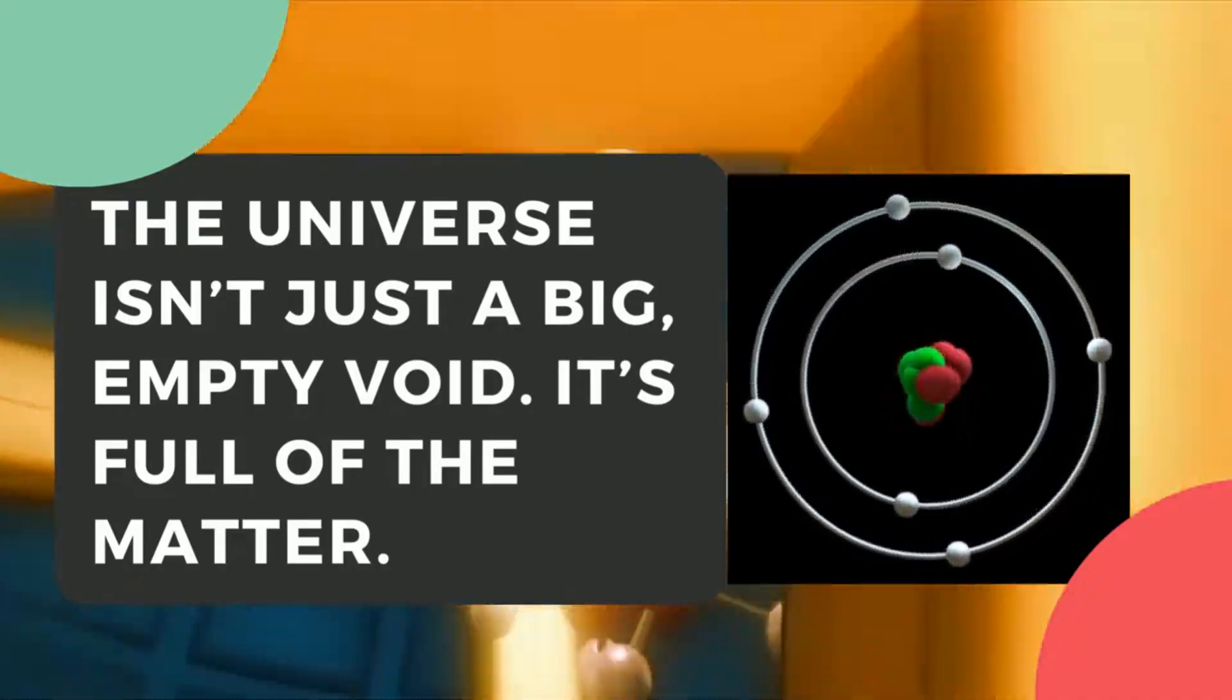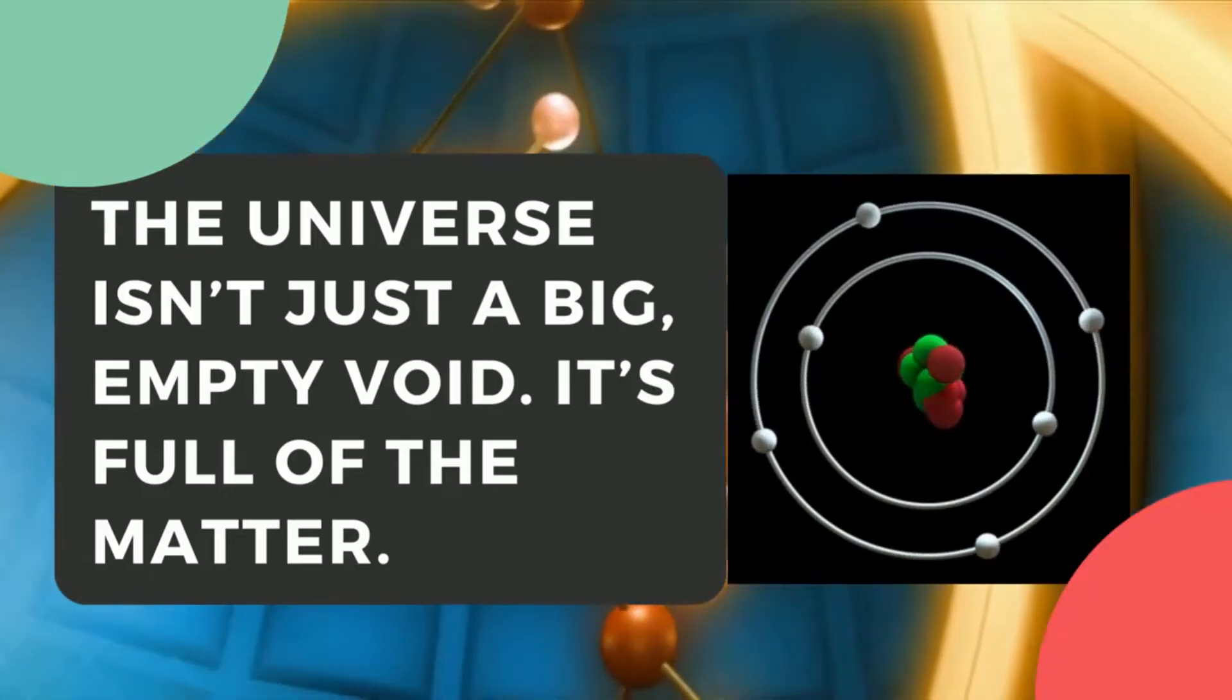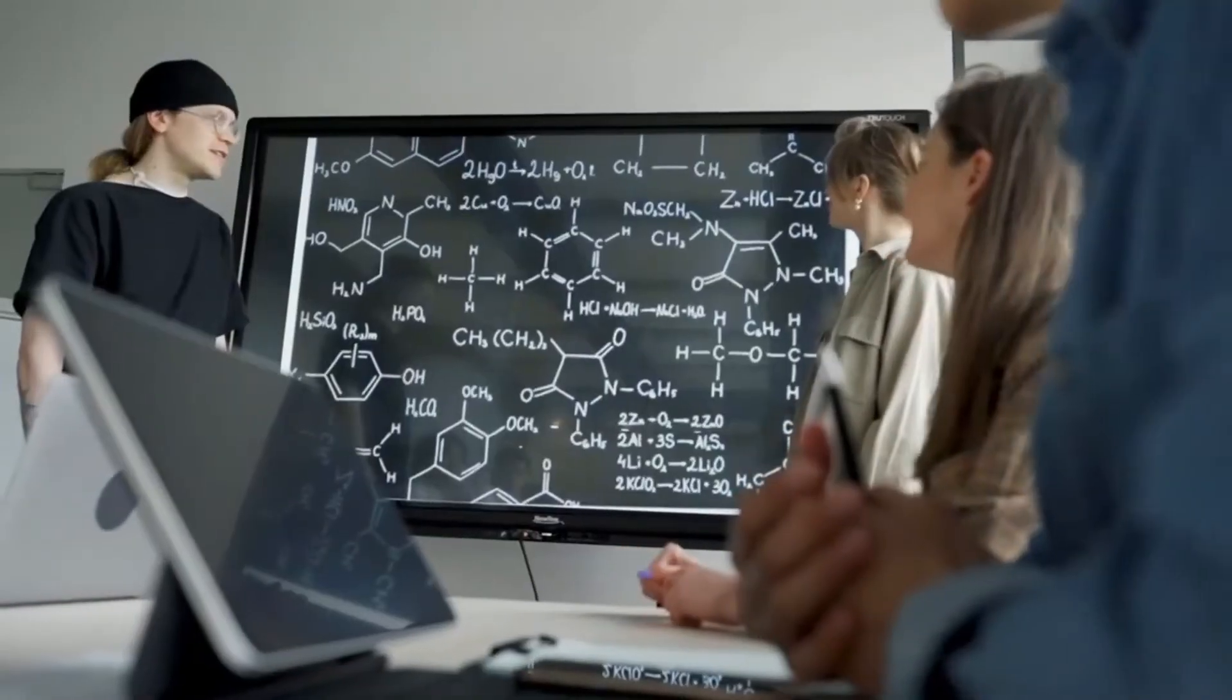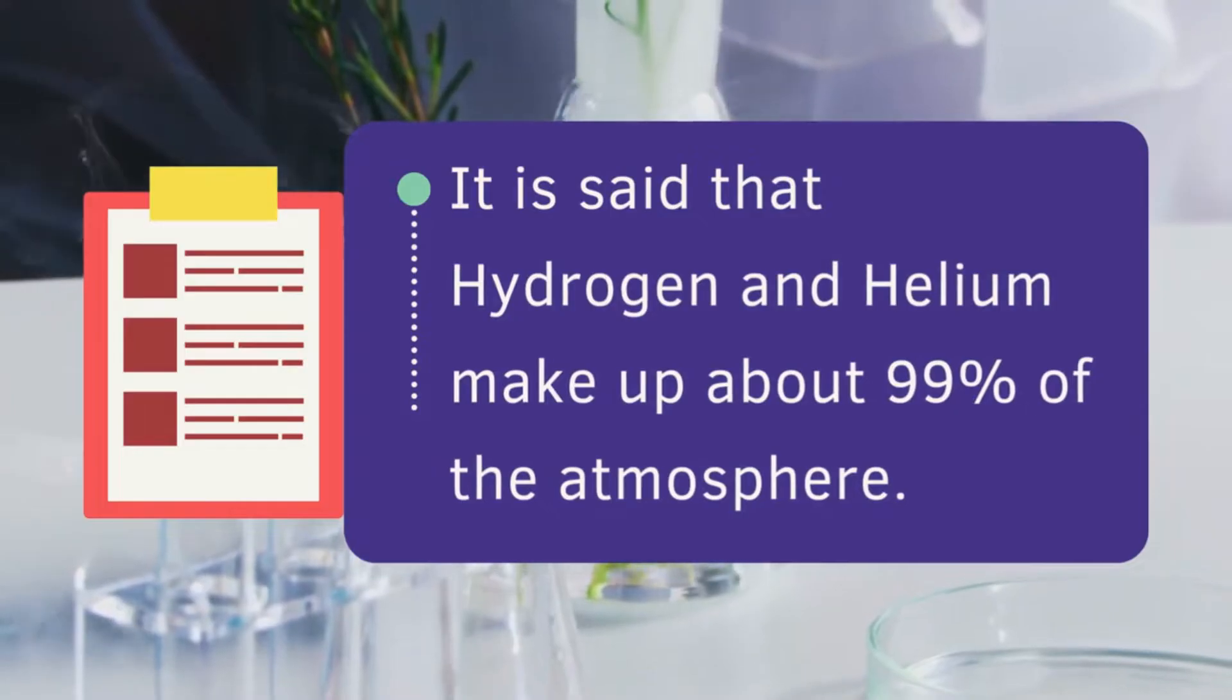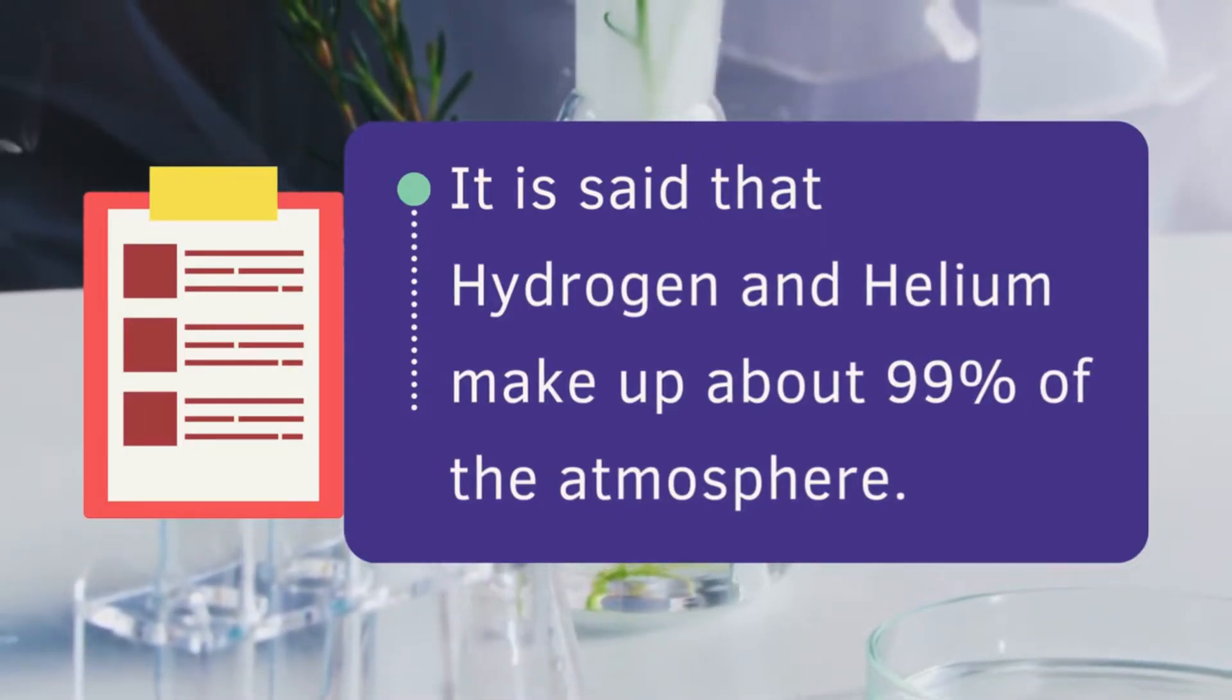We're all familiar with the periodic table of elements, which lists all of the elements we've discovered so far here on Earth. It is said that hydrogen and helium make up about 99% of the atmosphere.